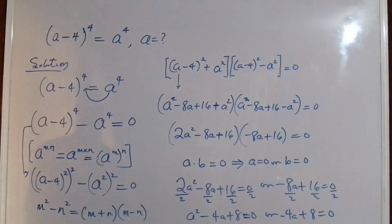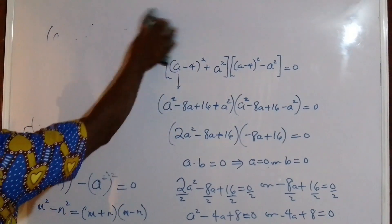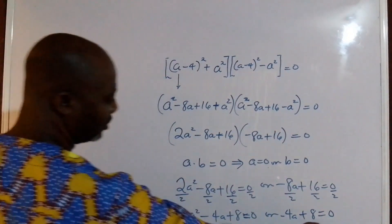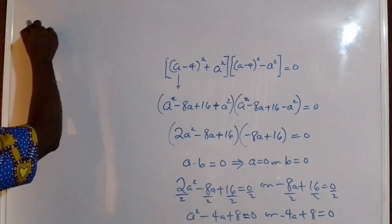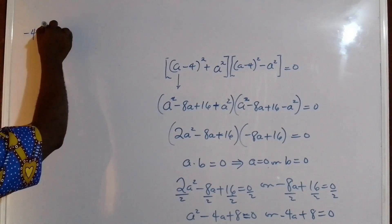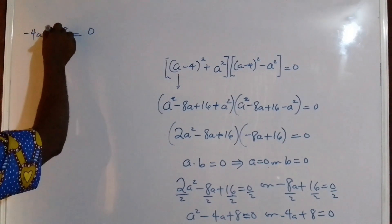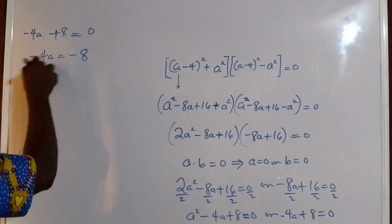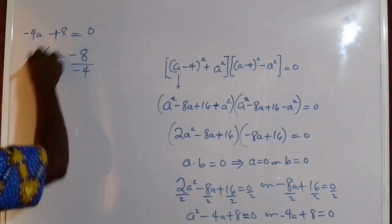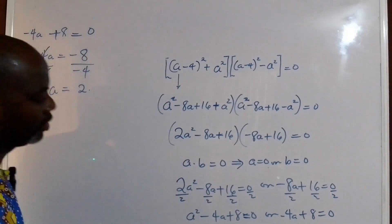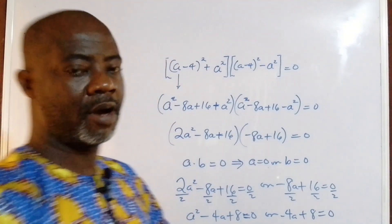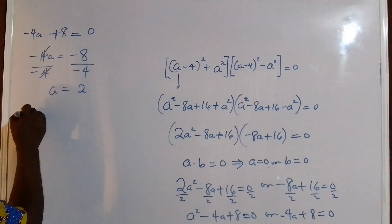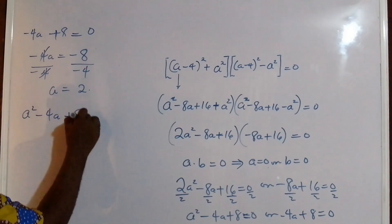Let's quickly dispatch with the simpler factor: we have minus 4a plus 8 equals zero. Dividing both sides by minus 4, we get a equals 2. So that's the solution from the second factor. Now coming to the first: a squared minus 4a plus 8 equals zero.